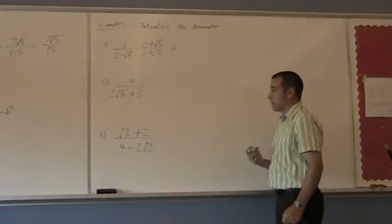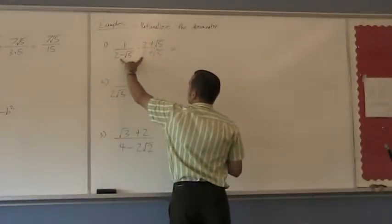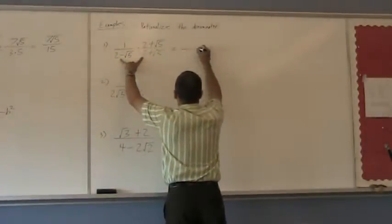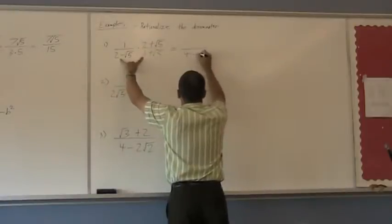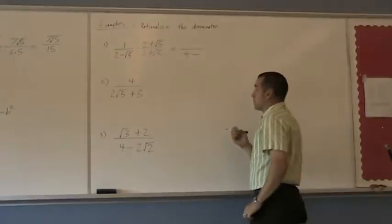So that gives us, if you remember from last lesson, the first number squared. So 2 times 2, that's going to give me 4. Subtract the second number squared. Well, square root of 5 times square root of 5 is 5.